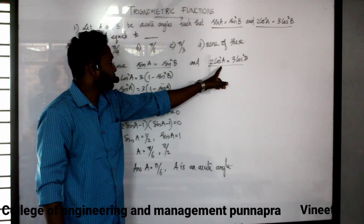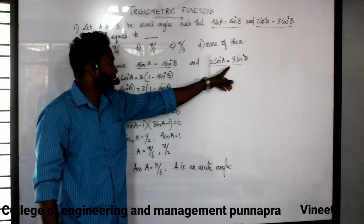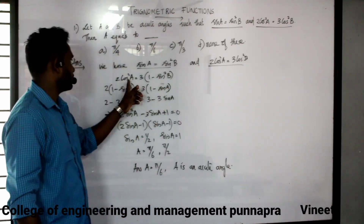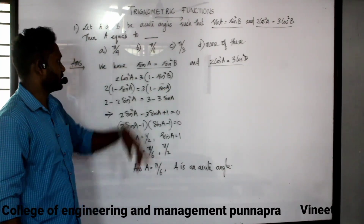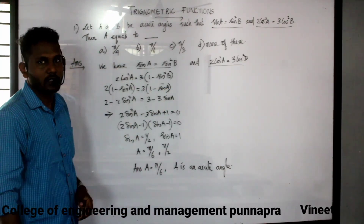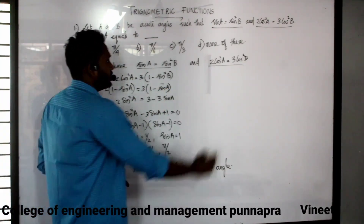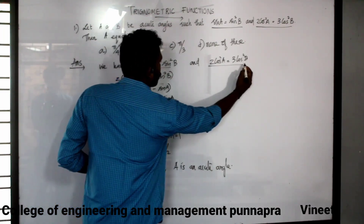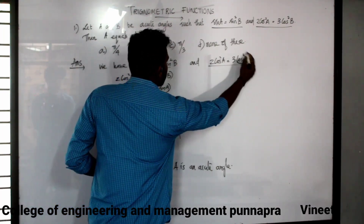This statement is 2 cos square b is equal to 3 cos square b. These 3 cos square b can be written as cos square b, and we substitute 1 minus sin square b into the equation.